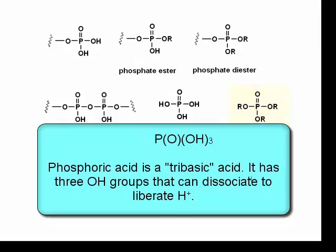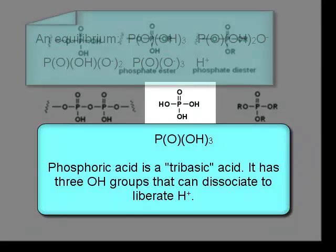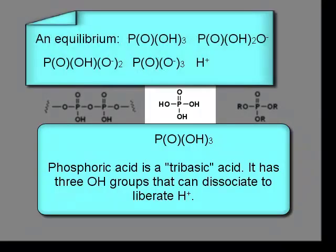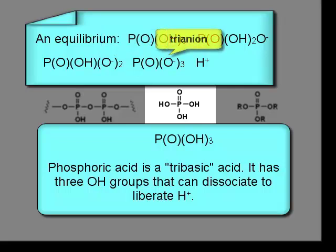If you take this phosphoric acid and put it into water and allow it to dissociate, you will get to an equilibrium of the different anions: a significant amount of the monoanion with one proton dissociated, some of the di-anion with two protons dissociated, and a small amount of the tri-anion with three protons dissociated.